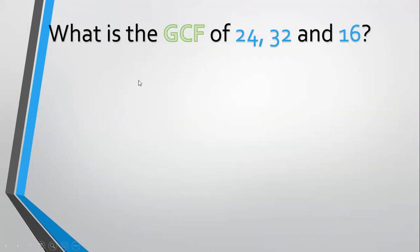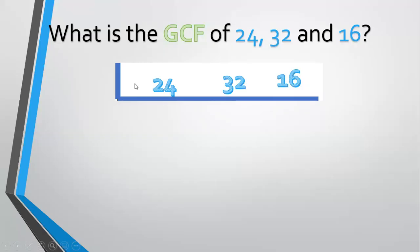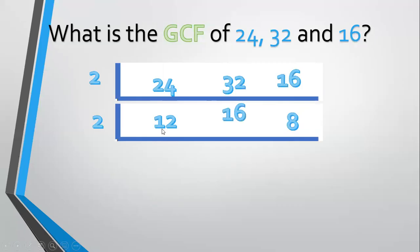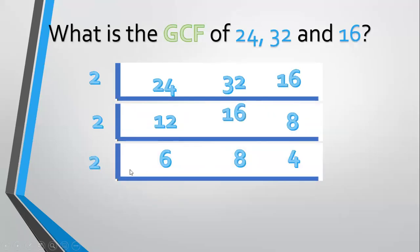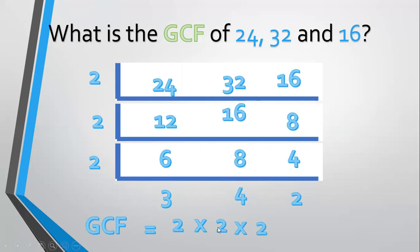Another example, what is the GCF of 24, 32, and 16? Align 24, 32, and 16. Divide by a prime common factor, 2. 24 divided by 2 equals 12. 32 divided by 2 equals 16. 16 divided by 2 equals 8. Divide again by 2. 12 divided by 2 equals 6. 16 divided by 2 equals 8. 8 divided by 2 equals 4. 6 divided by 2 equals 3. 8 divided by 2 equals 4. 4 divided by 2 equals 2. 3, 4, and 2 have no prime common factor, so the GCF equals 2 times 2 times 2 equals 8.